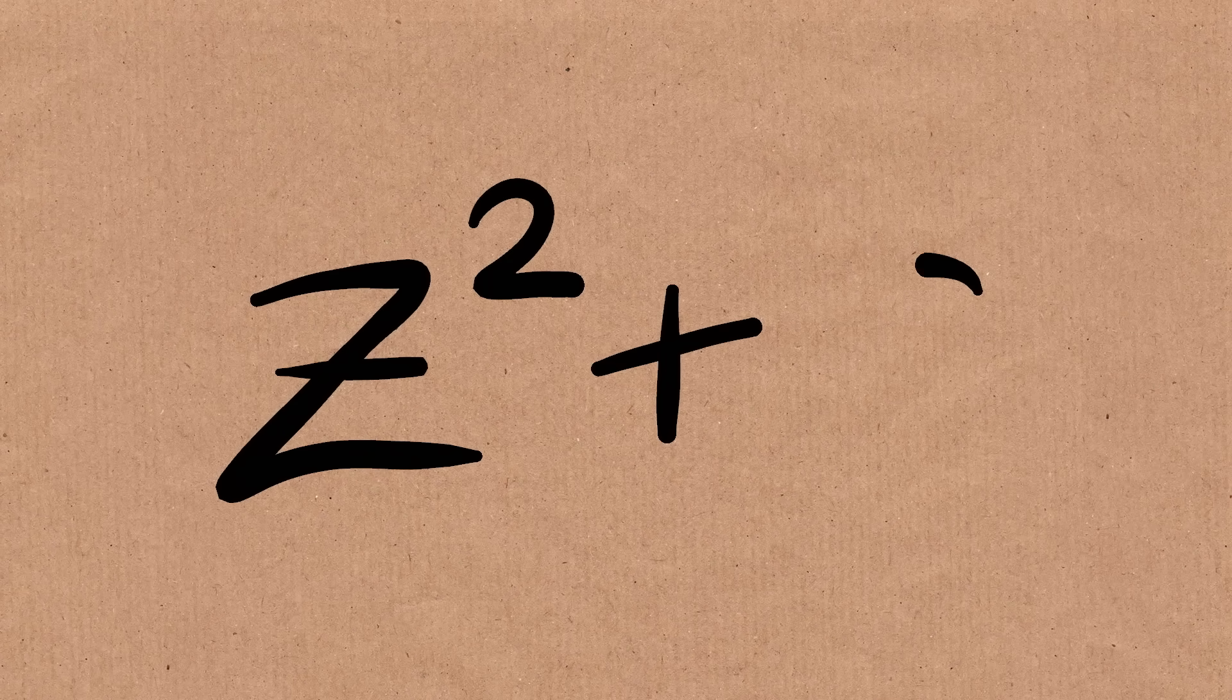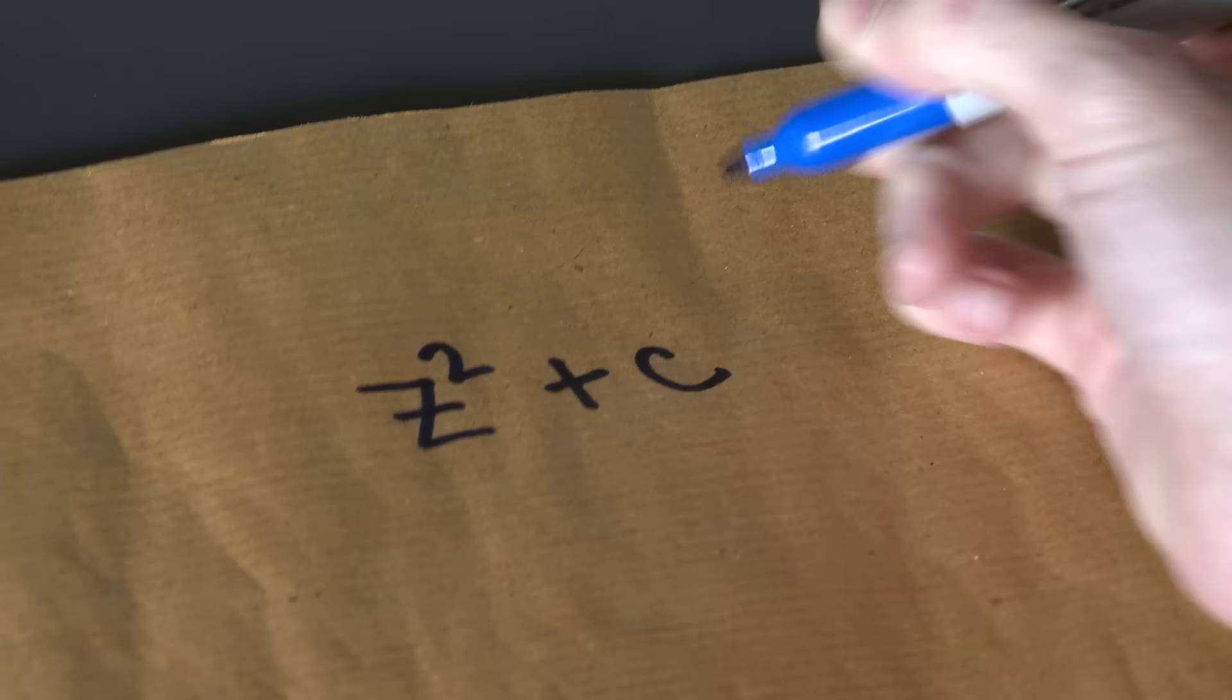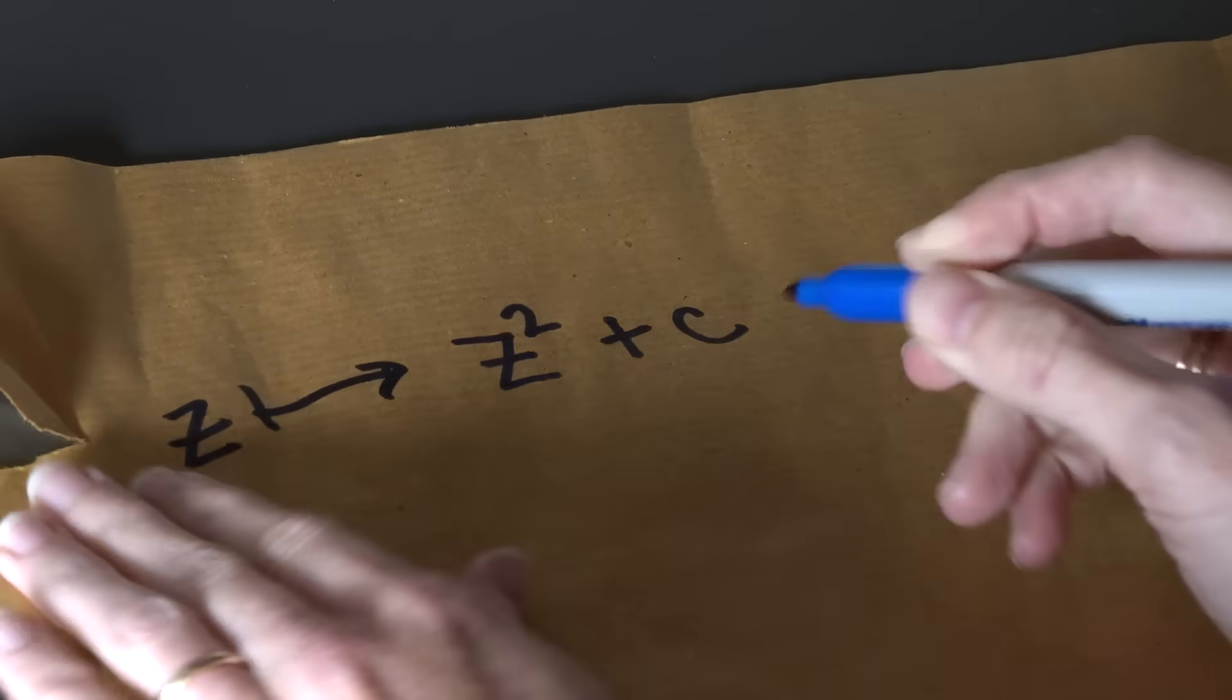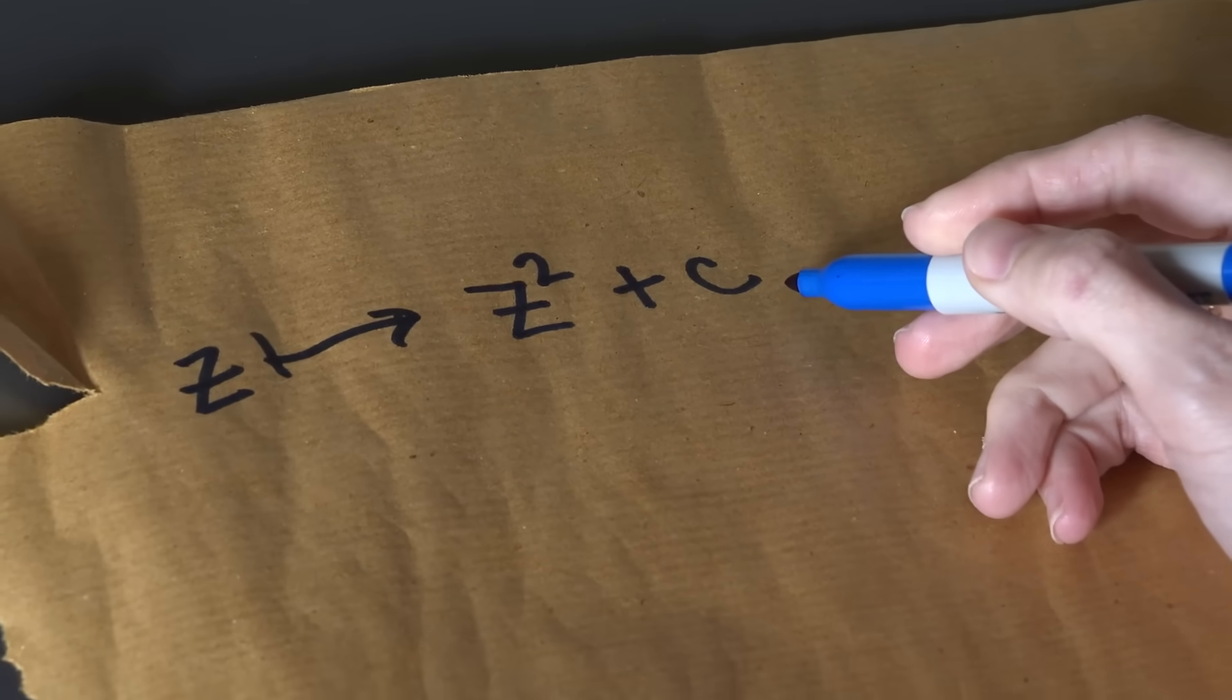Alright, so here is where we start, which is where we seem to always start, which is with z squared plus c. So I'm interested in the function which takes in a number z, squares it, and then adds some constant c.